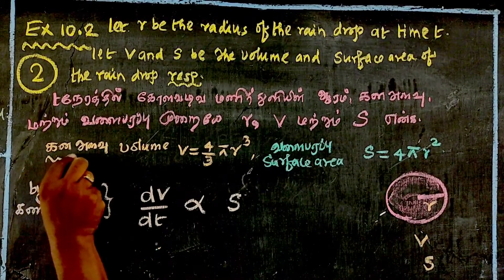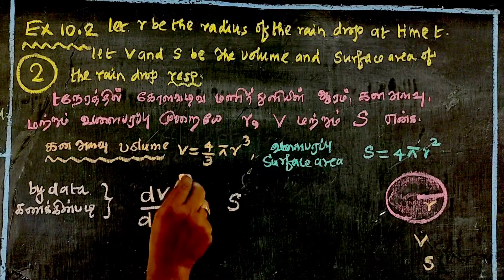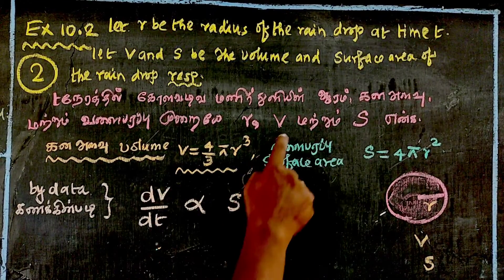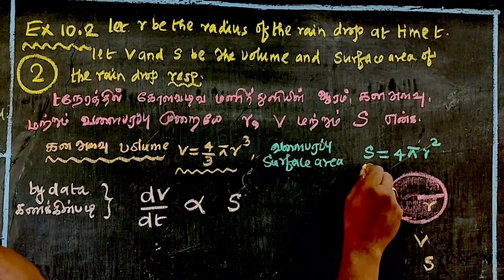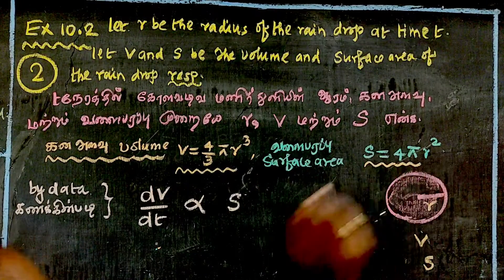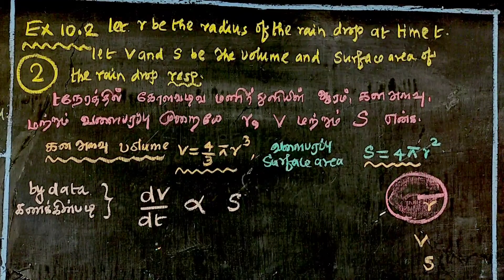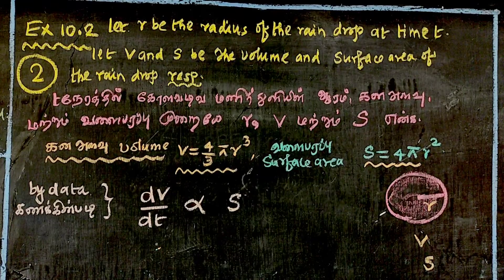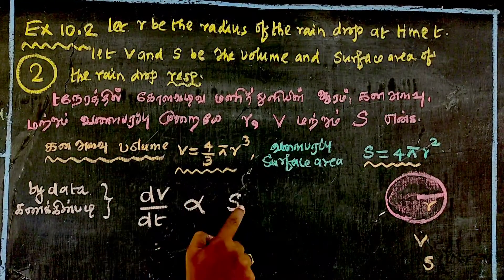Volume of the raindrop is 4 by 3 pi r cubed. The rate of change in volume is proportional to surface area.